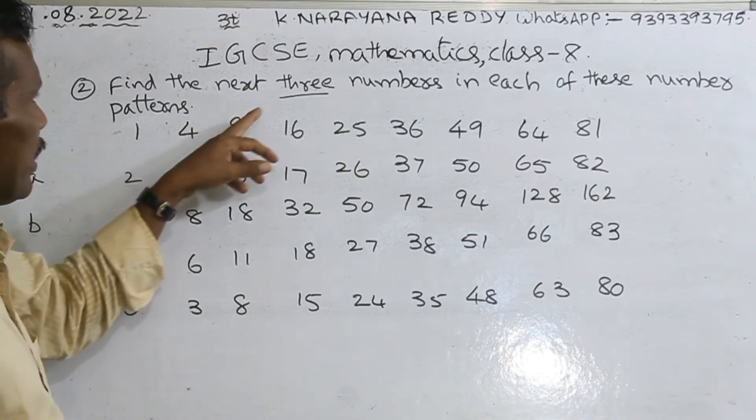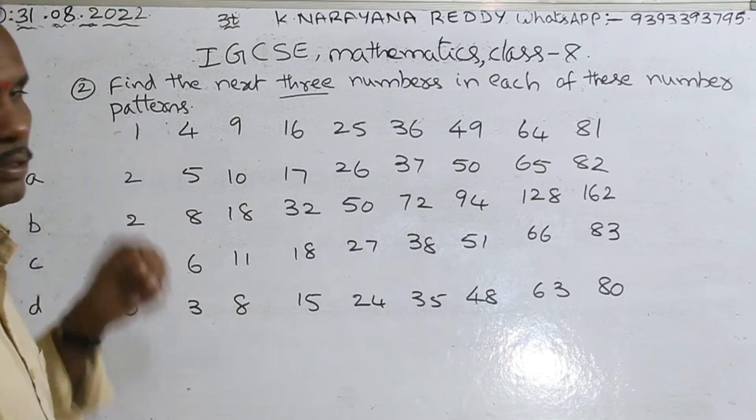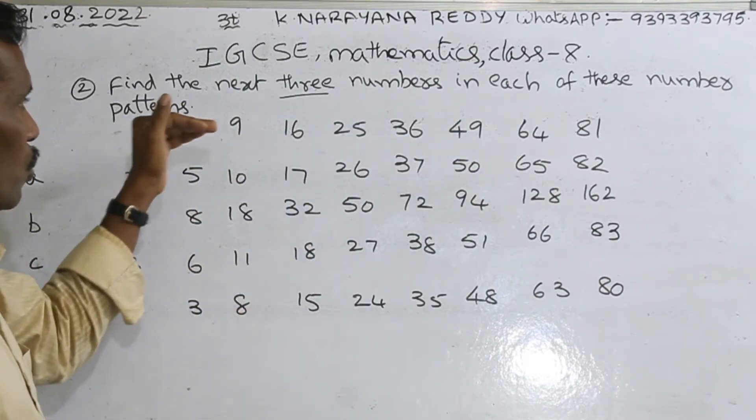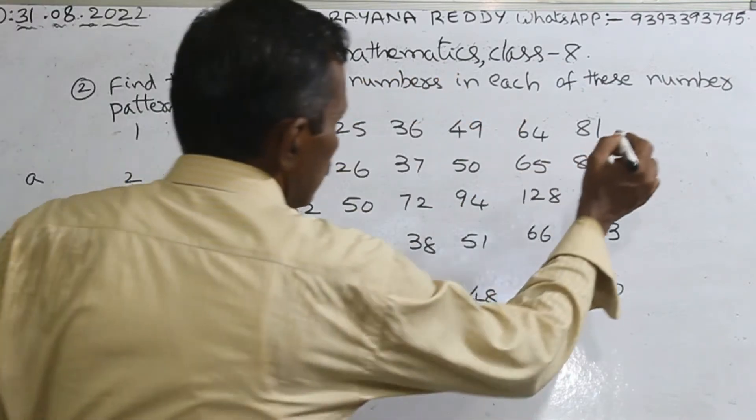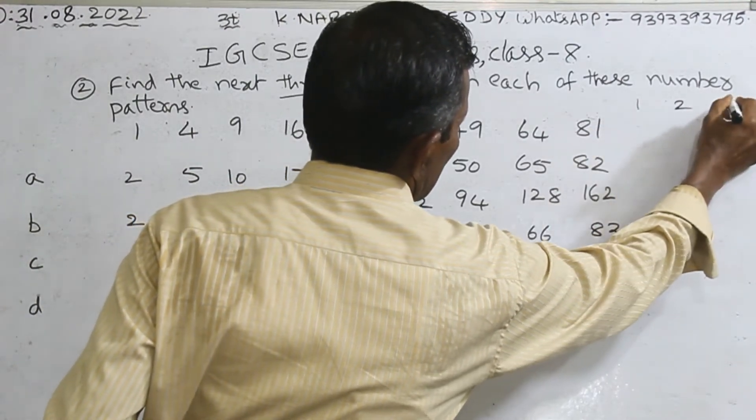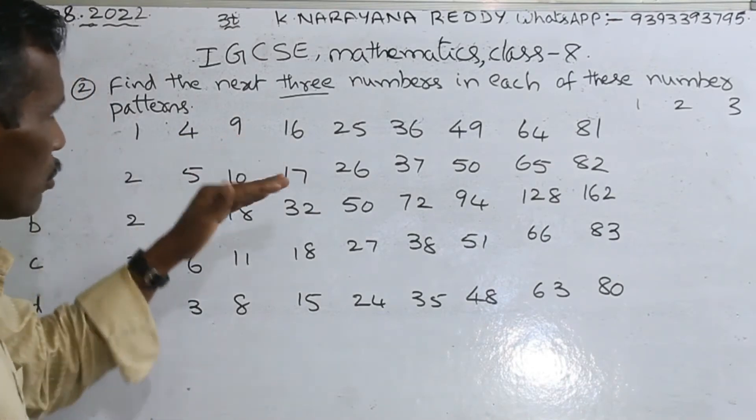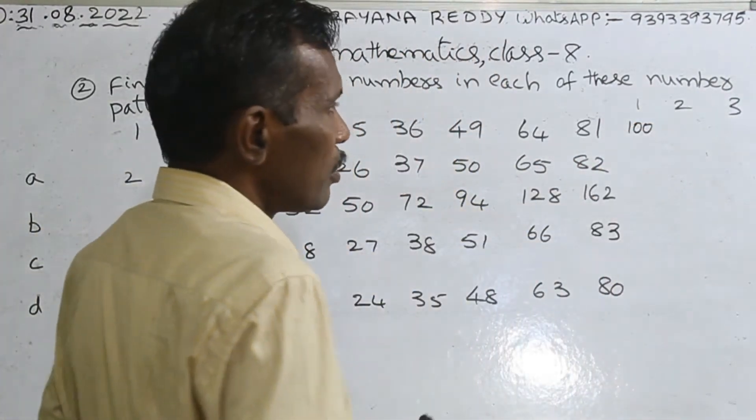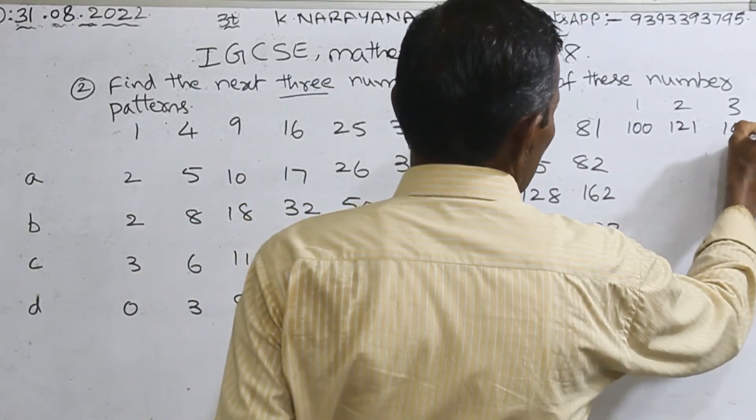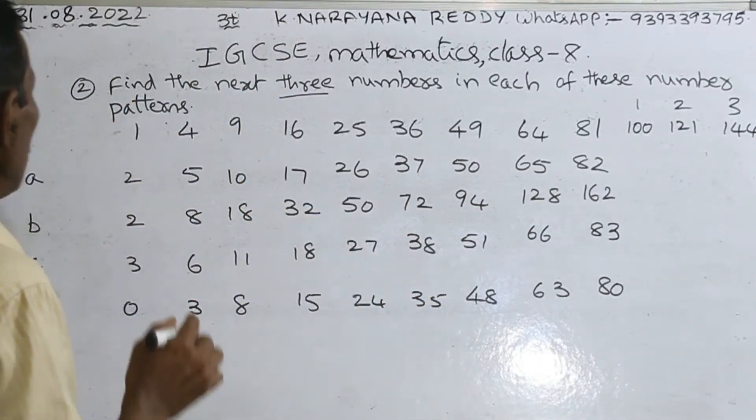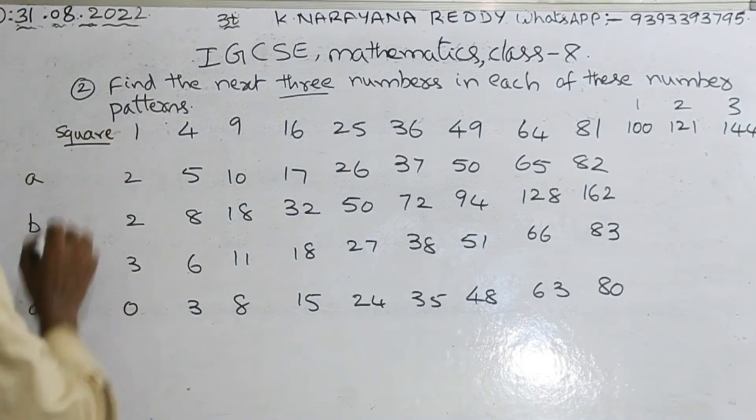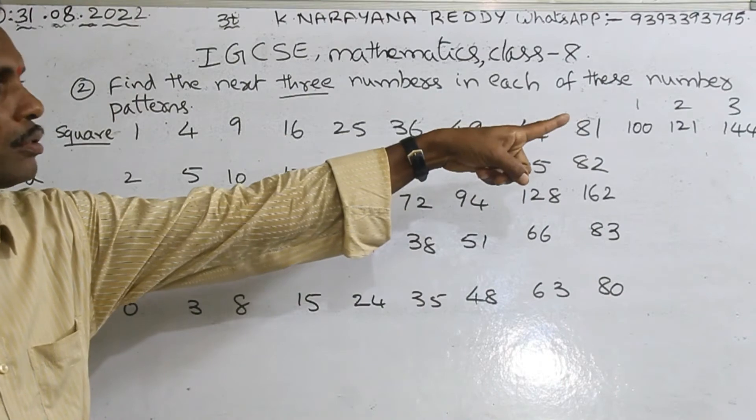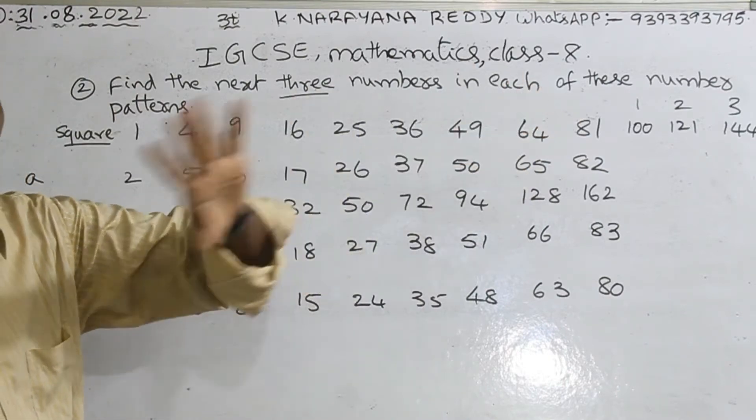See, next question. Find next three numbers in each of these patterns. What is the pattern here? 1, 4, 9 up to 81. Means squares, yes. 1 square, 2 square, 3 square, 4 square and that. But we want to find another three patterns. 10 square, 11 square, 12 square. That is it.